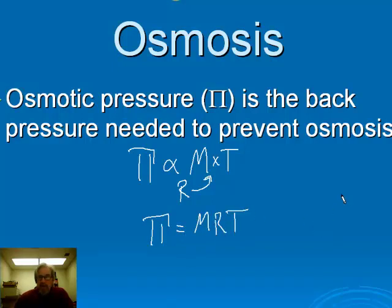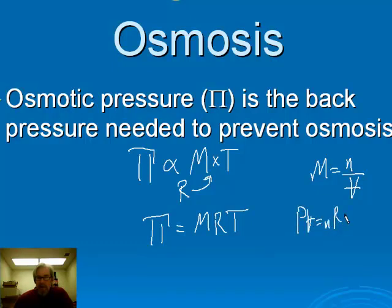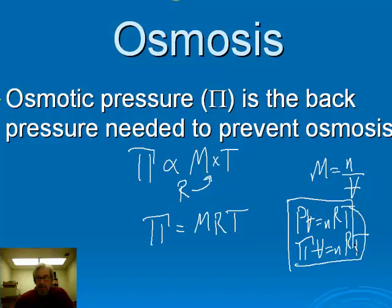Even though this has nothing to do with gases, the constant of proportionality is R. What's even more interesting: if your volume is measured in liters, molarity is moles divided by volume, so we get a complete analogy to the ideal gas law. The ideal gas law says PV equals nRT, but this is saying that Pi times V also equals nRT. It's an analogous equation, so it's easy to remember. However, Pi equals MRT is the easier form to use.